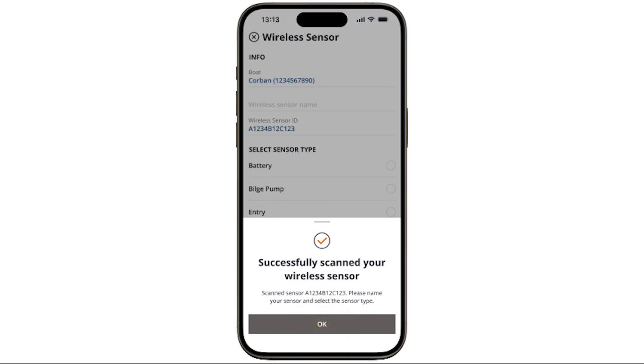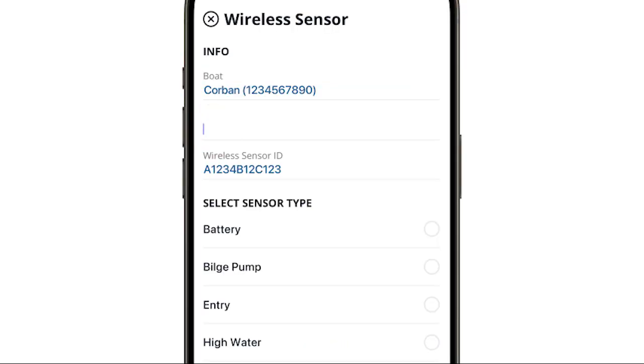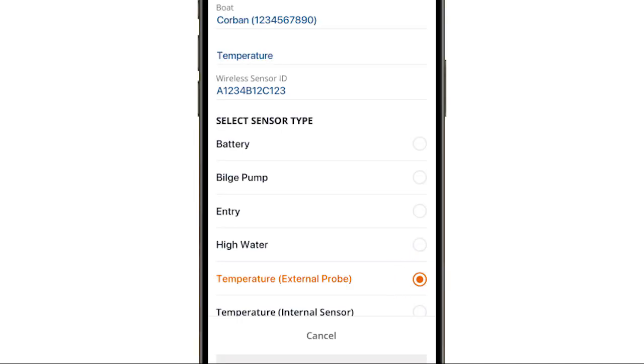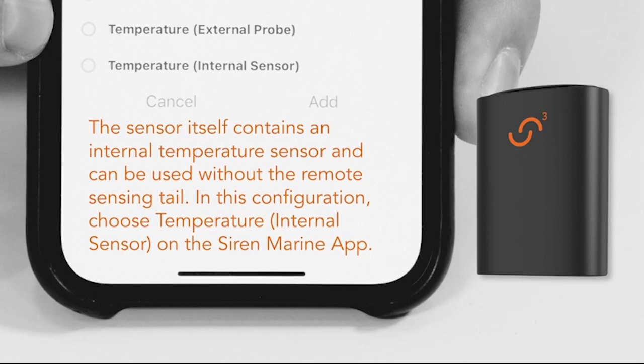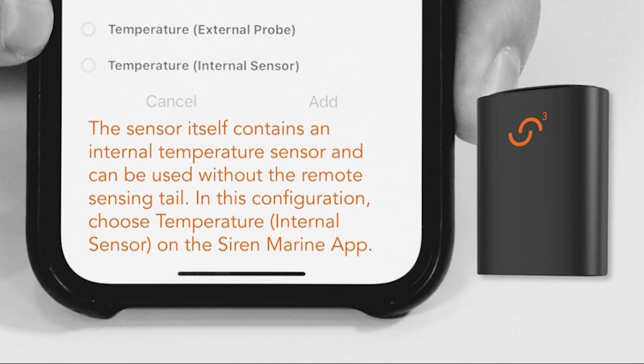You're required to input a name for the sensor. Then select the sensor type. The sensor itself contains an internal temperature sensor and can be used without a remote sensing tail. In this configuration, choose Temperature Internal Sensor on the Siren Marine app.